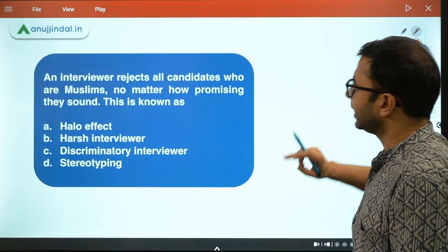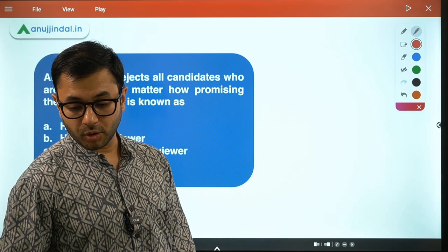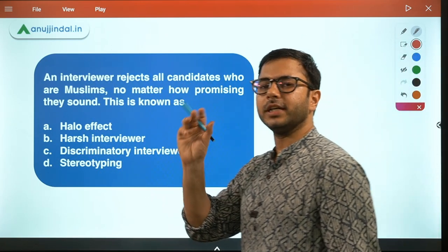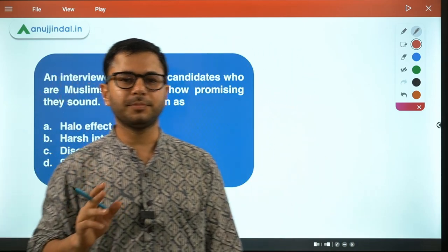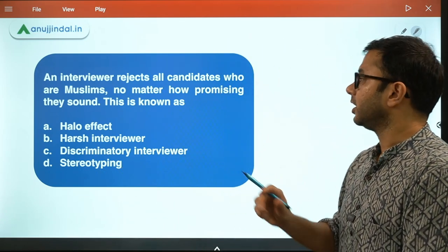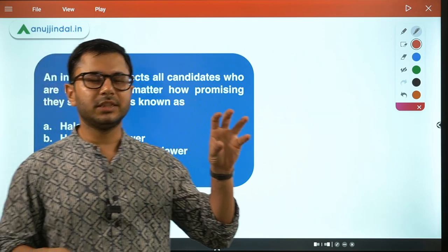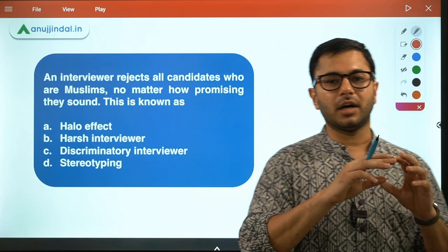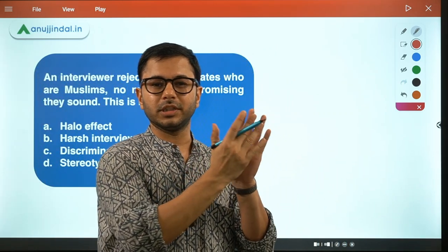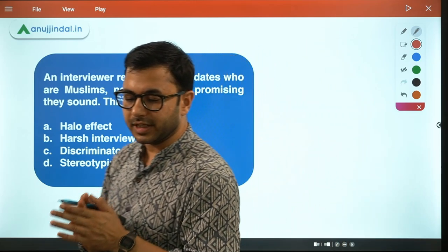Next question: an interviewer rejects all candidates who are Muslims, no matter how promising they sound. This is known as what? So a particular basis - you have rejected all candidates who belong to that category, which is religion in this case. Halo effect is when we use one thing to perceive a person's qualities based on that one quality only - so it doesn't fit here. 'Harsh interviewer' does not fit at all. What about 'discriminatory interviewer'?